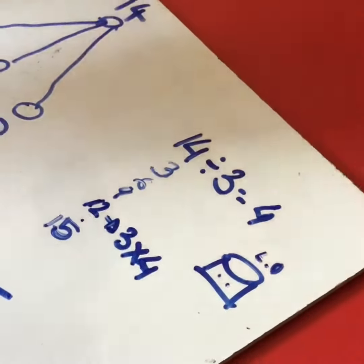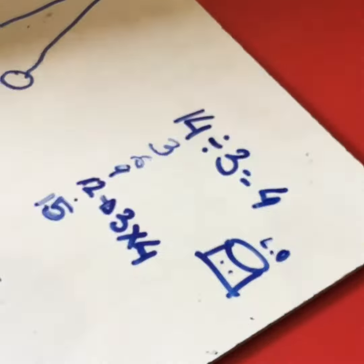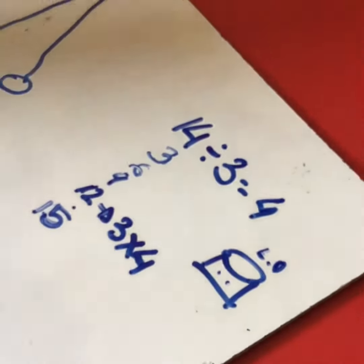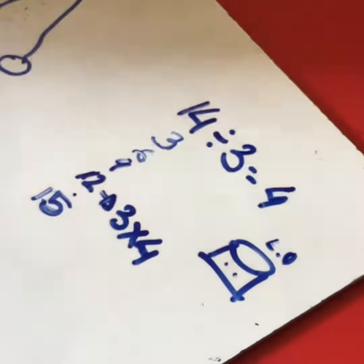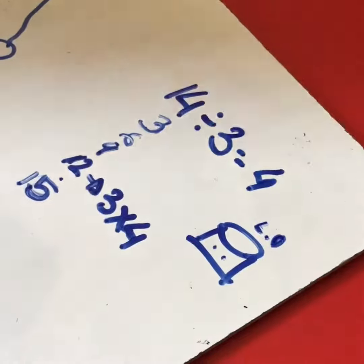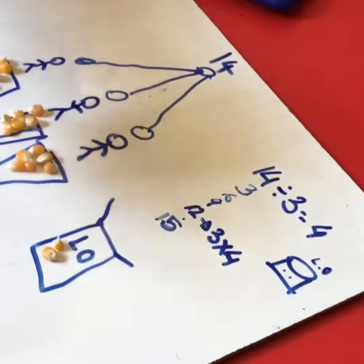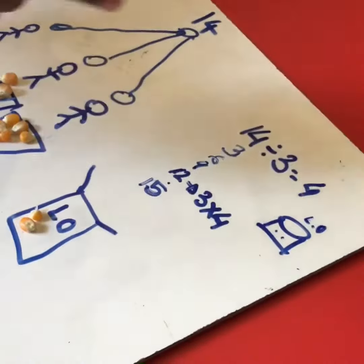That's for 14, so 3 times 1 is 3, 3 times 2 is 6, 3 times 3 is 9, 3 times 4 is 12. So we have 12, we have leftovers, so the 12 plus the leftovers is 14.